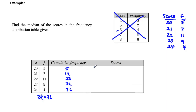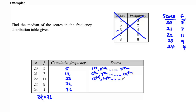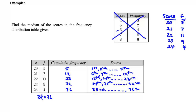The first through fifth scores have occurred in the first group. The sixth through twelfth scores have occurred by the second group. In the third group we must have the thirteenth through twenty-third scores. From the fourth group you have the twenty-fourth through thirty-second scores. And in the last group you go from the thirty-third up to the thirty-sixth score.